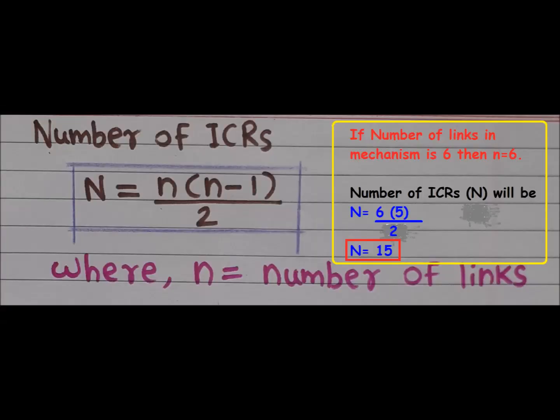If the number of links in the mechanism is 6, that is n equals 6, then the number of ICRs will be 6 into 5 divided by 2, which equals 15. By the same method we can write all 15 ICRs.